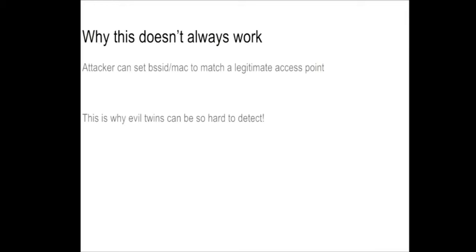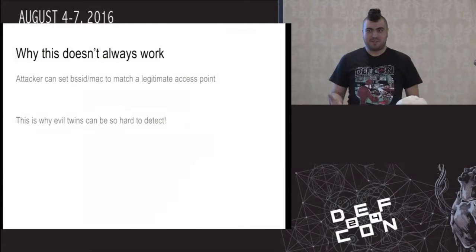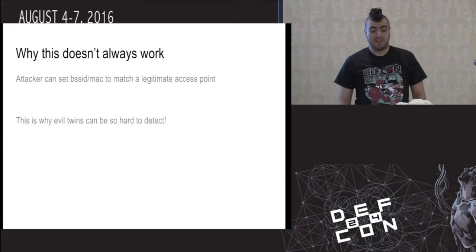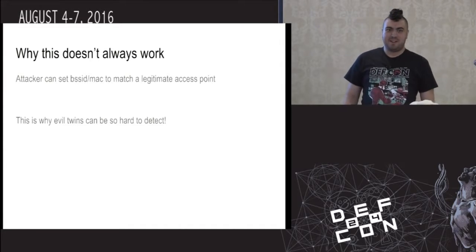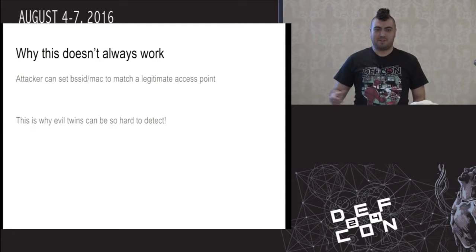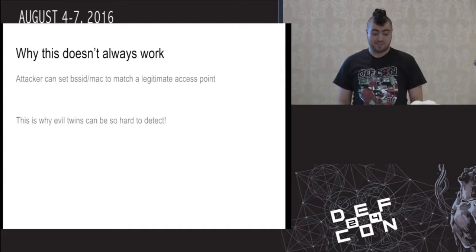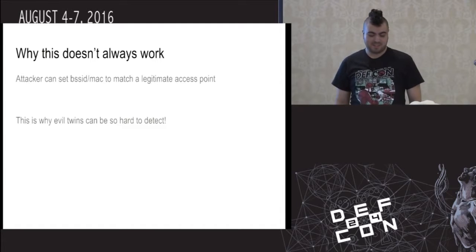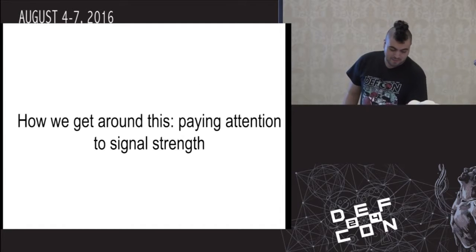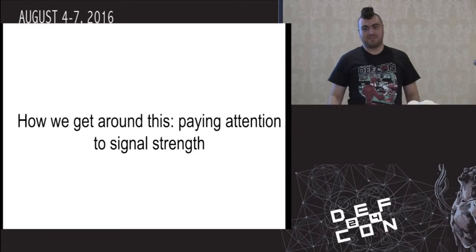This doesn't always work, because a motivated attacker can simply use something like AiroDump to create a list of all the valid BSSIDs for your wireless network. At that point it's pretty easy to spin up an AP that has the BSSID matching one of your legitimate access points, not just the SSID and channel. So this actually makes evil twins really hard to detect. The way we get around this is by paying attention to signal strength.